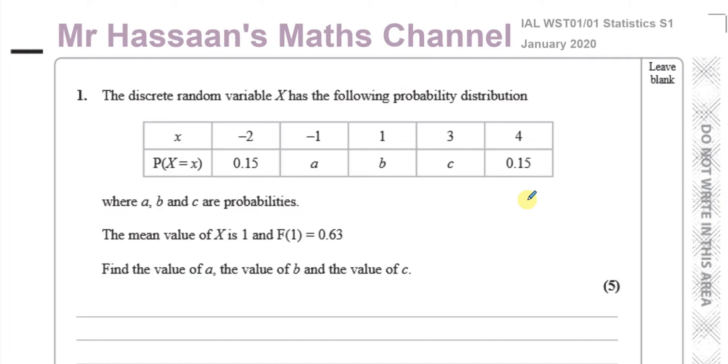Question number one is about discrete random variables. The discrete random variable X has the following probability distribution. So the possible values of the random variable X are minus 2, minus 1, 1, 3, and 4. The probability of minus 2 occurring is 0.15, the probability of 4 occurring is 0.15 as well. The probabilities of minus 1, 1, and 3 occurring are unknown: A, B, and C.